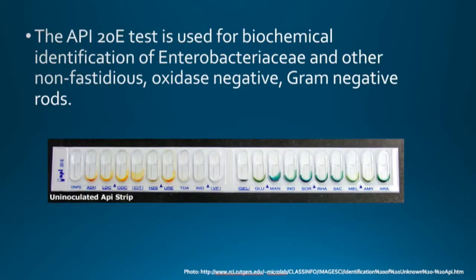The API 20E test is used for biochemical identification of Enterobacteriaceae and other non-fastidious oxidase-negative gram-negative rods. Make sure that it is an oxidase-negative lactose fermenter. If you have a non-lactose fermenter that is oxidase-positive, then the API is not for you.